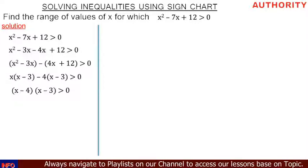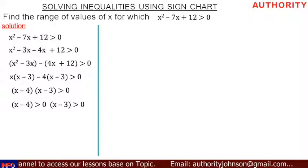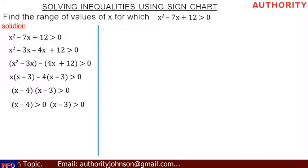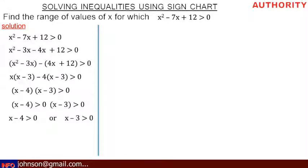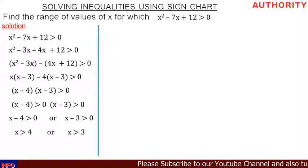Let's separate it individually: x minus 4 is greater than zero, or x minus 3 is greater than zero. Taking minus 4 and minus 3 to the other sides respectively, we get x is greater than 4, or x is greater than 3. So we have solved and obtained two values: x greater than 4 or x greater than 3.